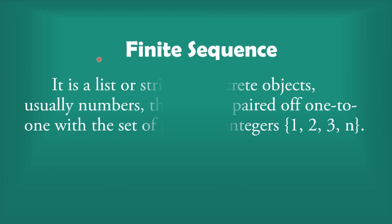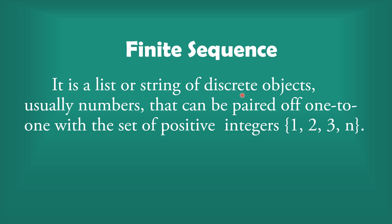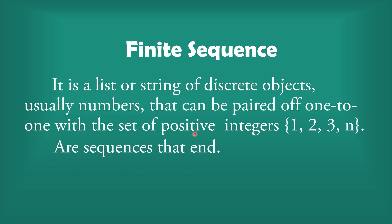How about finite sequence? A finite sequence is a list or string of discrete objects, usually numbers, that can be paired one-to-one with the set of positive integers from 1 to n. It has a first term and a last term — it has a beginning and an end. We can count the number of terms.